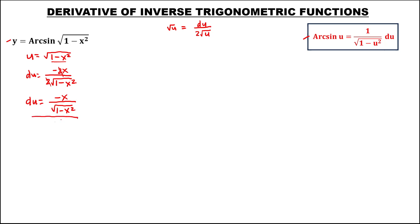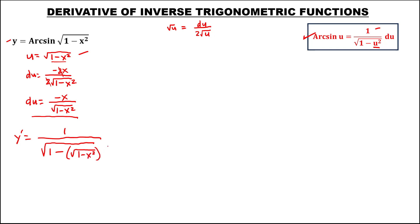So du equals negative x over the square root of 1 minus x squared. This is now du. To find the derivative from this formula, we have 1 over the square root of 1 minus u squared, and u is the square root of 1 minus x squared, quantity to the power 2, then times du — the derivative of u — that's negative x over the square root of 1 minus x squared.